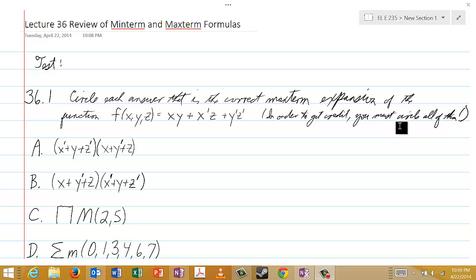Of course all of them that are correct. So the choices are x prime or y or z prime, anded with x or y prime or z, that's a. B is x or y prime or z, anded with x prime or y or z prime.